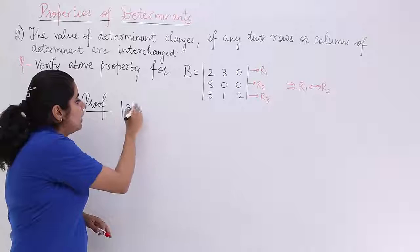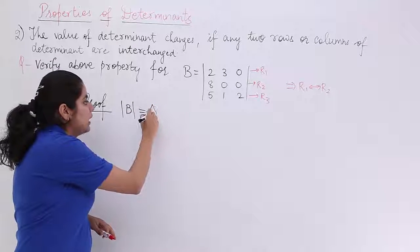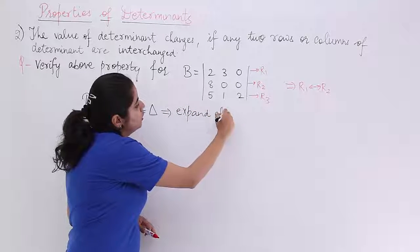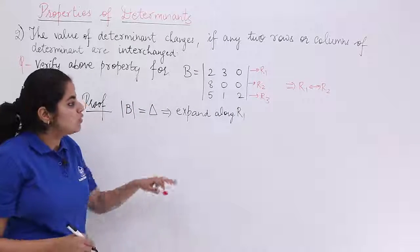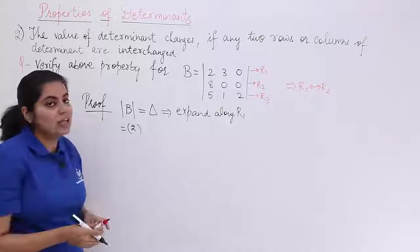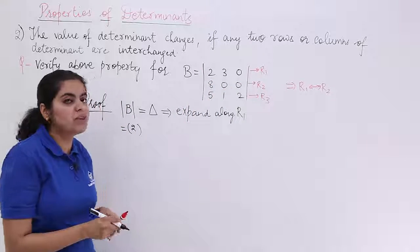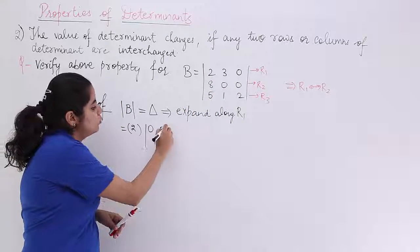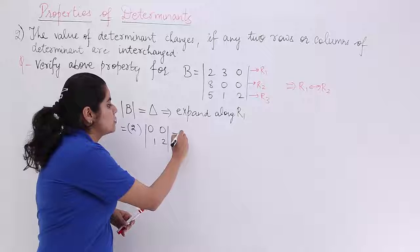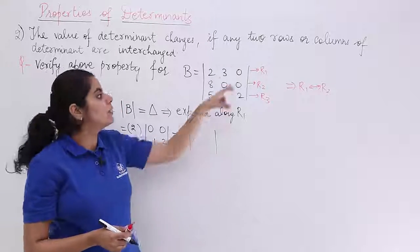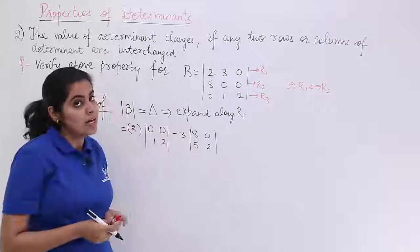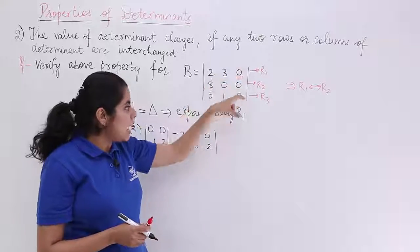First, we evaluate det(B) and expand along the first row R1. Expanding along R1: we have firstly 2, ignore the first column and the first row, giving sub-determinant with entries 0, 0, 1, 2. Then minus 3, ignoring the second column and the first row, giving entries 8, 0, 5, 2. Last we have plus 0 and a sub-determinant.